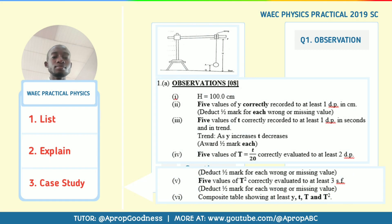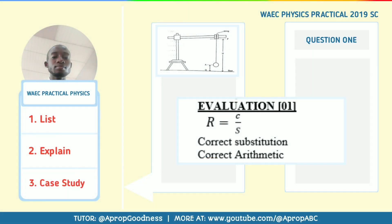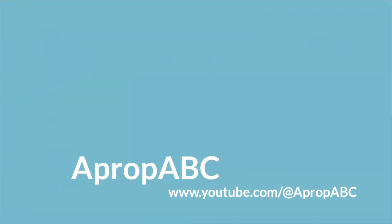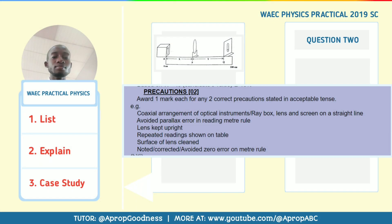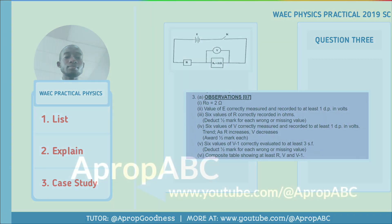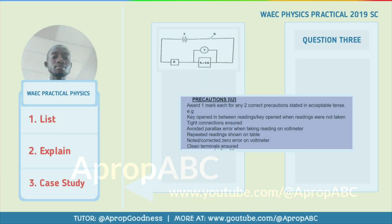Now let's move to the case study. Our case study is the WAEC physics practical 2019 for school candidates, Alternative A. If you check the observation, you see the things I talked about — measurement, correct decimal places. They check consistency of the recording figures and the correct units. Then look at the graph, slope, intercept, evaluation, accuracy, and precaution. Moving to question two — you can see the observation, graph, deduction, evaluation, accuracy, and precaution for that experiment. And question three — the observation, graph, slope, intercept, calculation, accuracy, and precaution. All these things are like patterns that you can use in your examination.